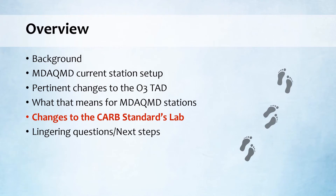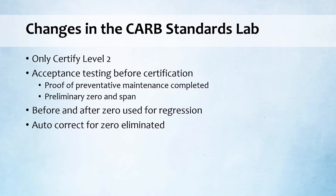I was asked to mention the planned changes for the CARB Standards Lab. After these changes are implemented, the CARB Standards Lab will only be certifying to level two. They will require acceptance testing before certification, which would include proof of preventative maintenance and a preliminary zero and span. Another major change is that zero will be used for regression but will no longer be used to autocorrect upscale points. For further questions about the CARB Standards Lab, I would direct you to talk to Louise Sorensen.